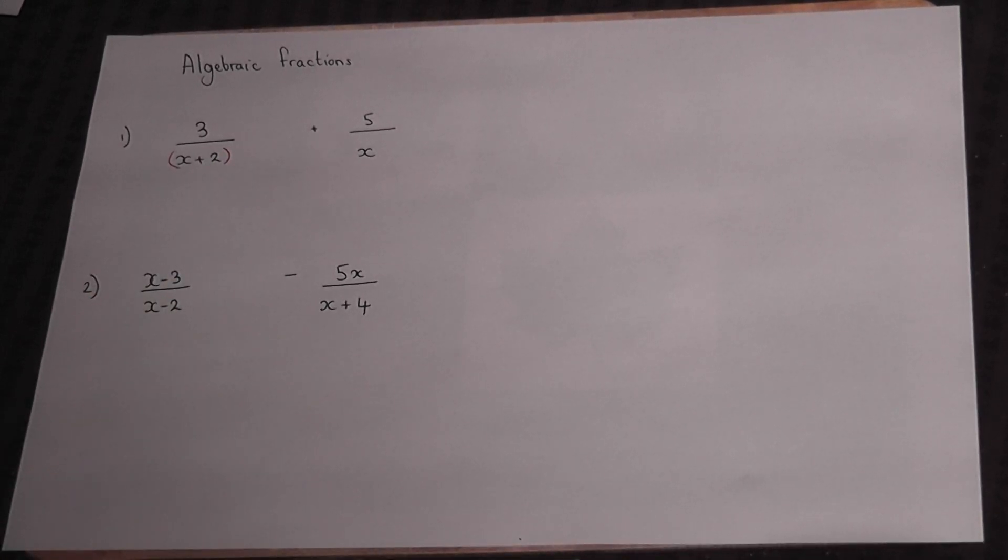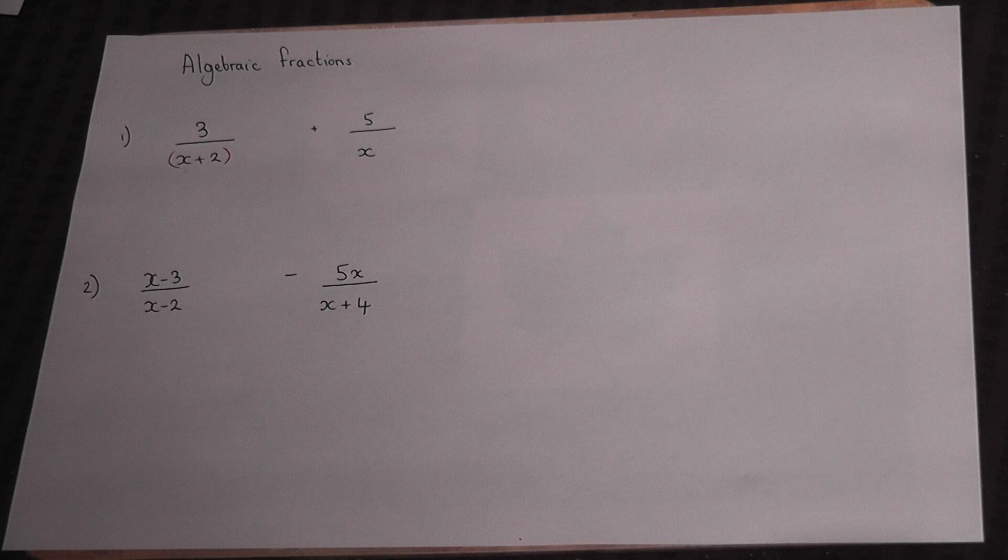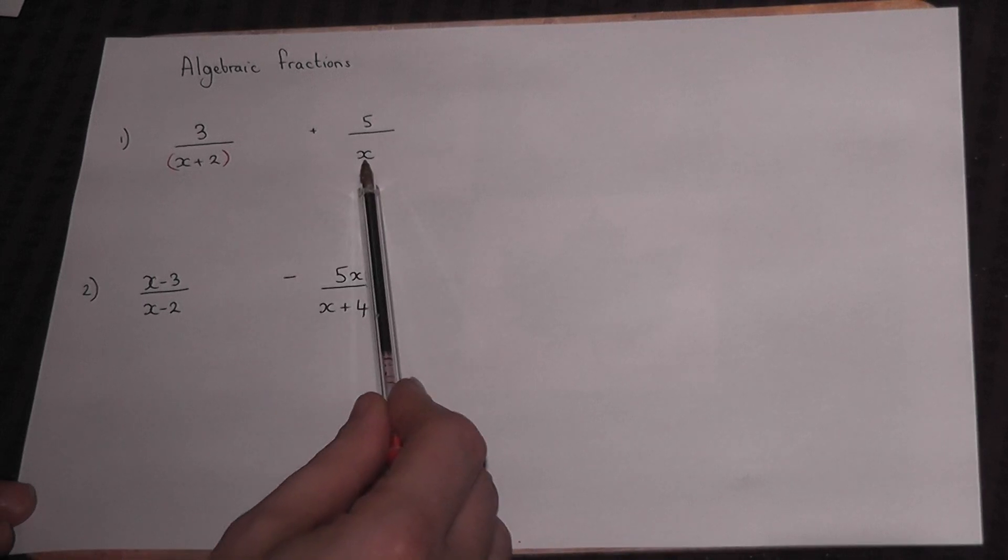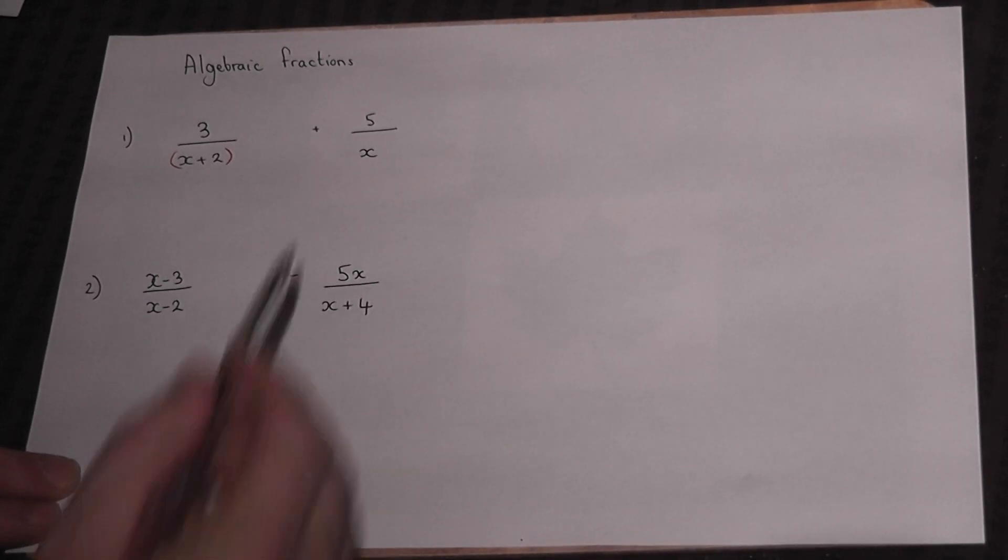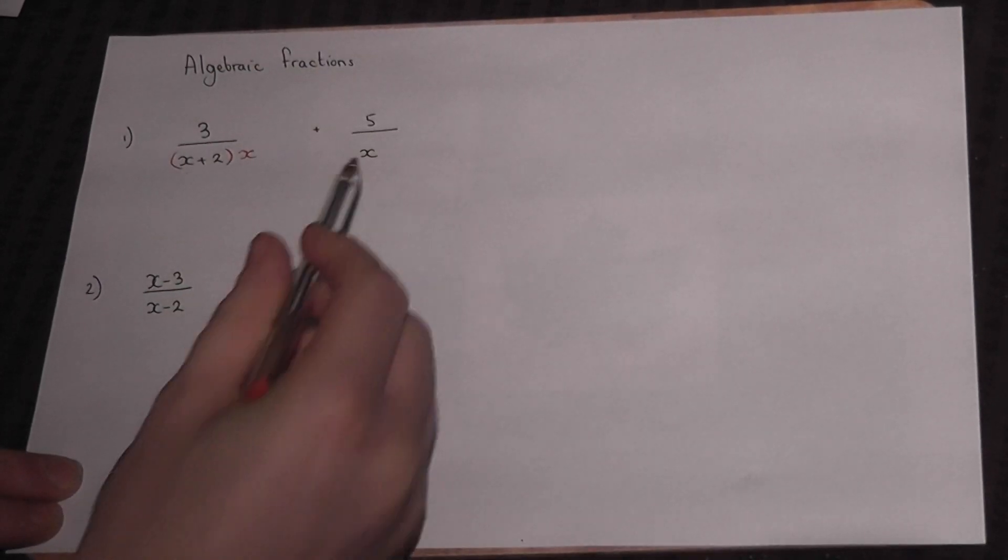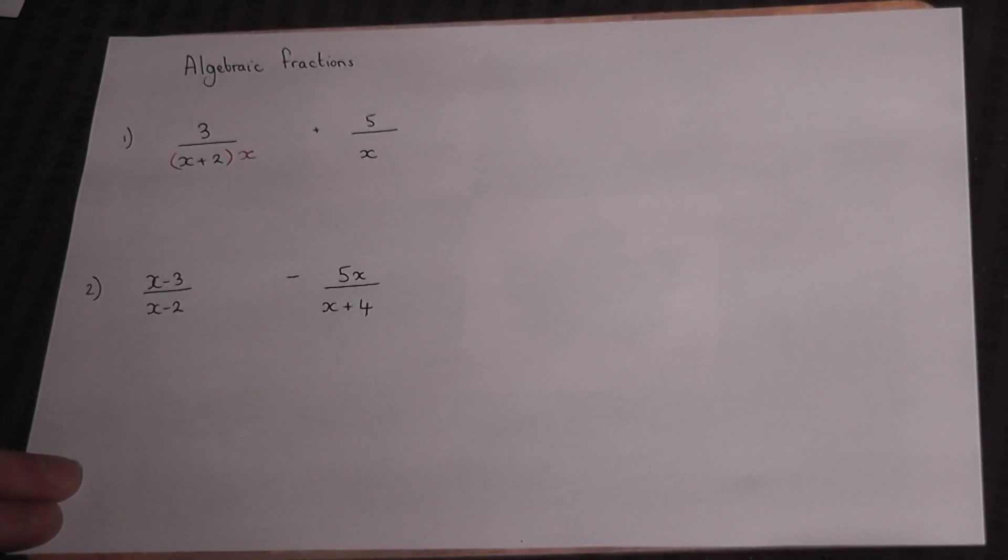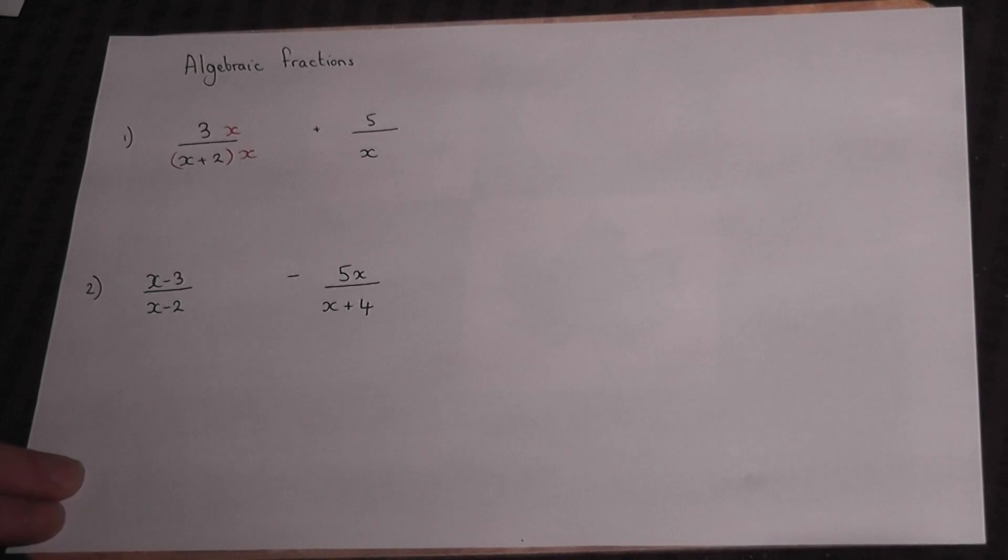To add together two fractions requires the same denominator, and there's a trick we use to achieve this. There's an x here by itself, so we force this x onto the other fraction by multiplying by x. What we do below the fraction we must also do above.